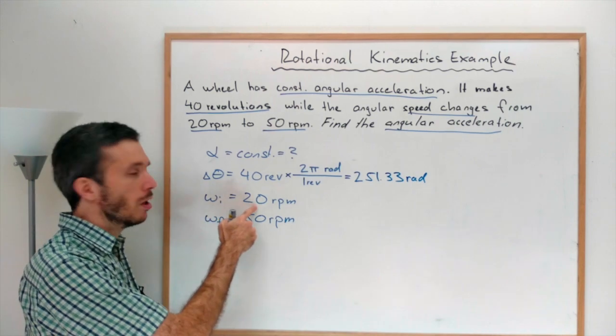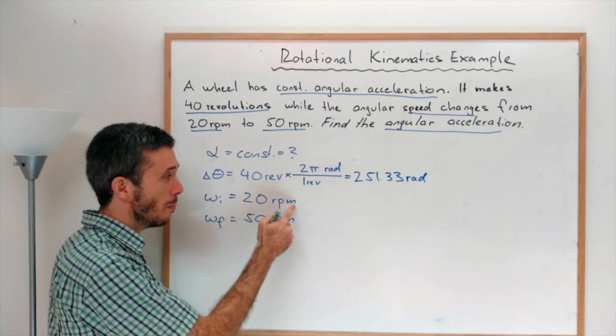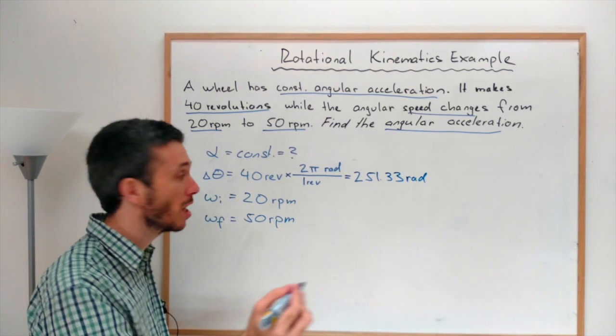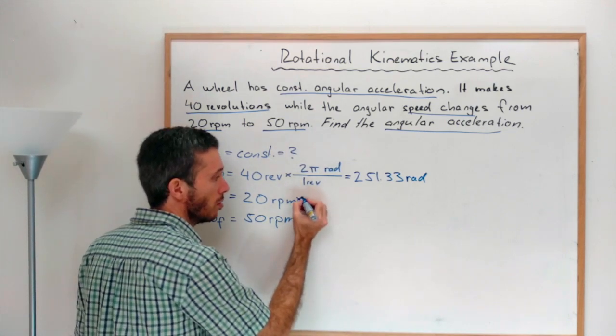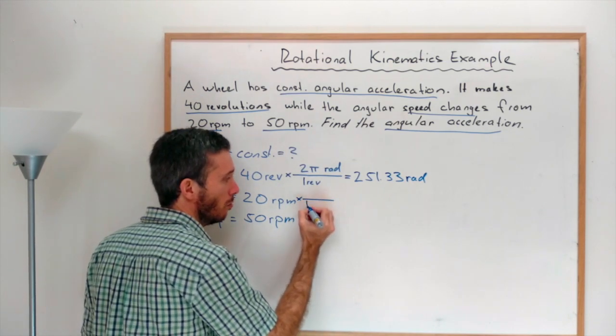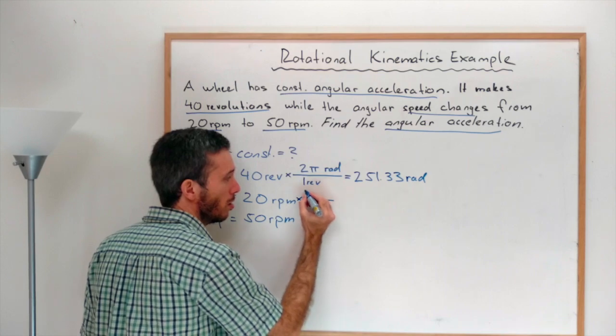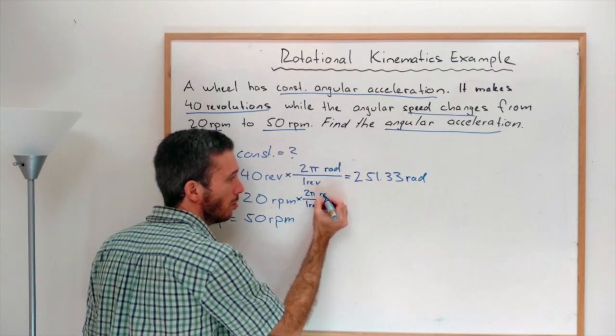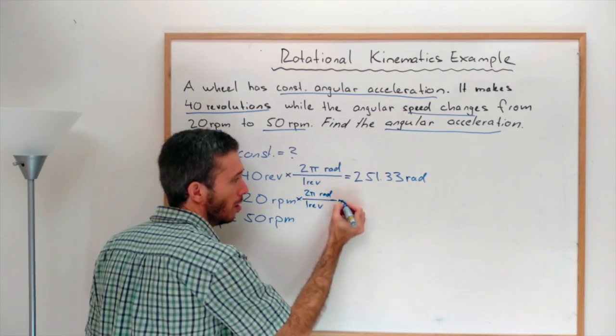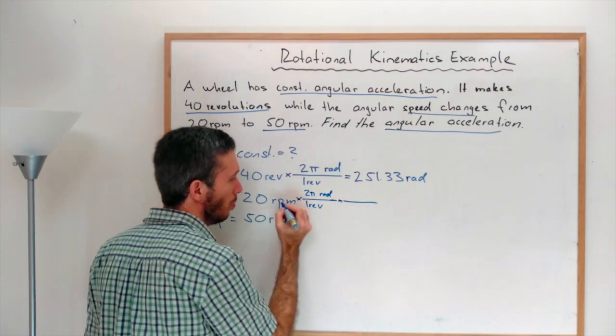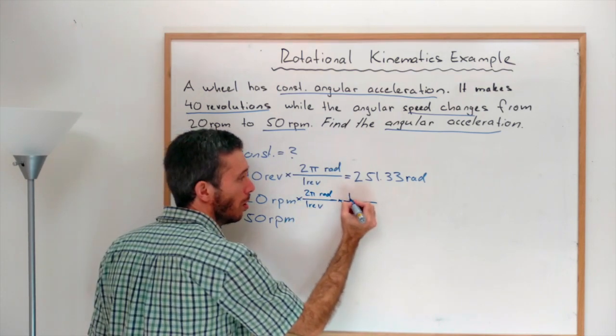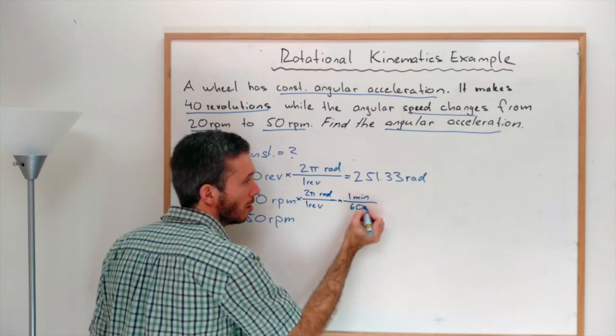Same thing for rpms, revolutions per minute. What we want is rads per second. So same trick as before. One revolution is 2 pi rads, and per minute, so we want to multiply by 1 minute which is 60 seconds.